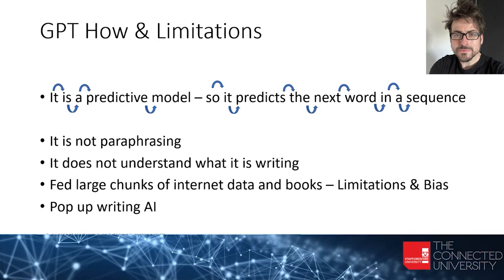So where does it get this information from? It's fed large chunks of internet data, books, and these sorts of things. I've read they've just done some deal now with journal repositories and writing repositories as well, so we're going to see this develop further. The big question you should ask yourself whenever you look at an open AI model like ChatGPT is: what has it been fed on? Because depending on what it's been fed on, it will have limitations and biases. And it is biased. It is rude. It is wrong. It does happen.